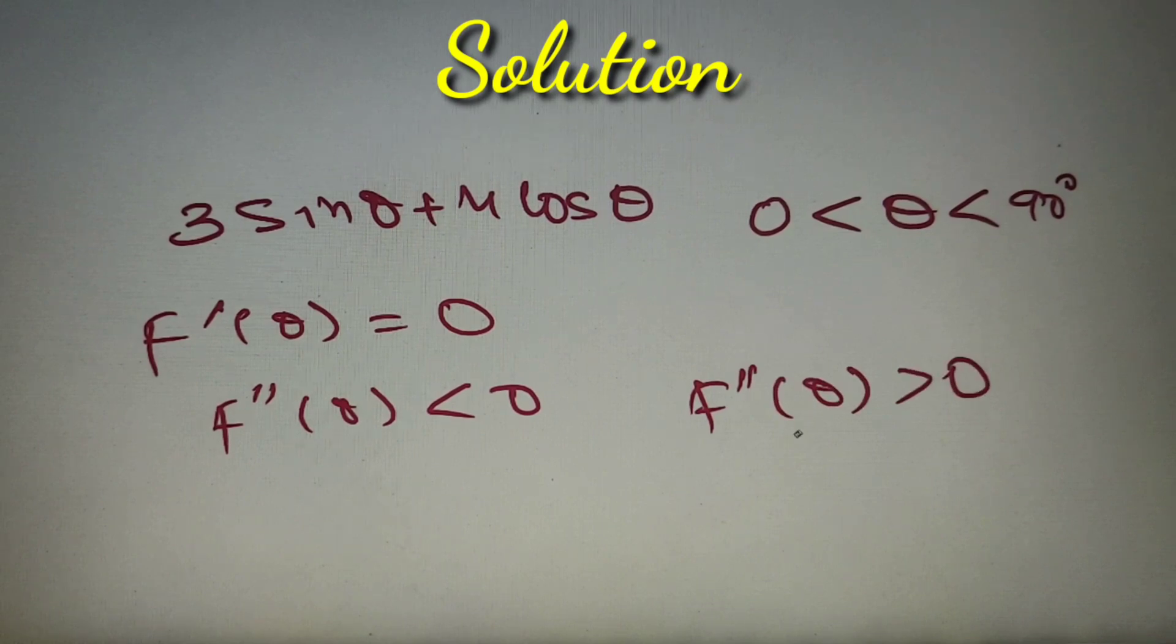Since we have to find the maxima, we have to make f double dash theta less than 0. So let's proceed with our question.